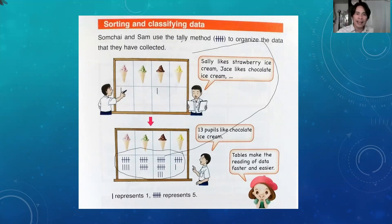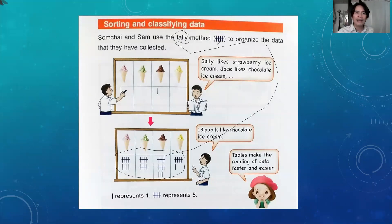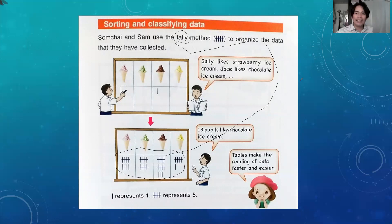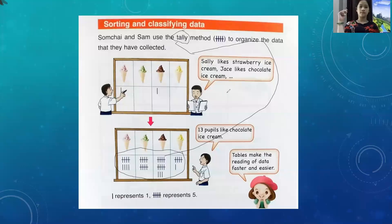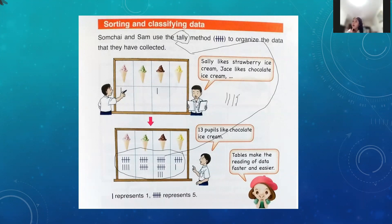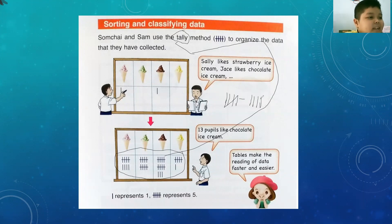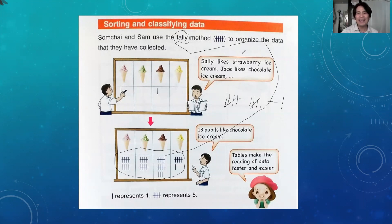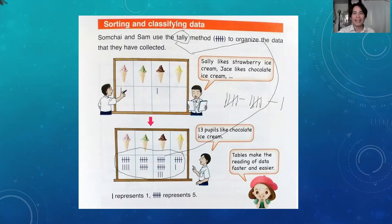This is what you call the tally. It's like you are playing badminton or volleyball — you say one point like this, two points, three points, four points, and then five points written like a gate. Six, seven, eight, nine, ten, eleven. That is the tally method — tally writing. So that's already sorting and classifying data.